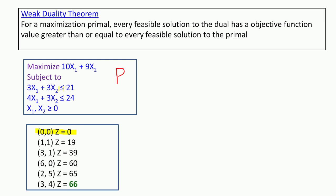The point (0, 0) satisfies 3×0 + 3×0 = 0 ≤ 21 and 0 ≤ 24, so it is feasible with objective function value 0. Next, (1, 1): since 3+3=6 ≤ 21 and 4+3=7 ≤ 24, it is feasible — not a corner point, not a basic feasible solution, but it satisfies all constraints — giving objective value 10+9 = 19.